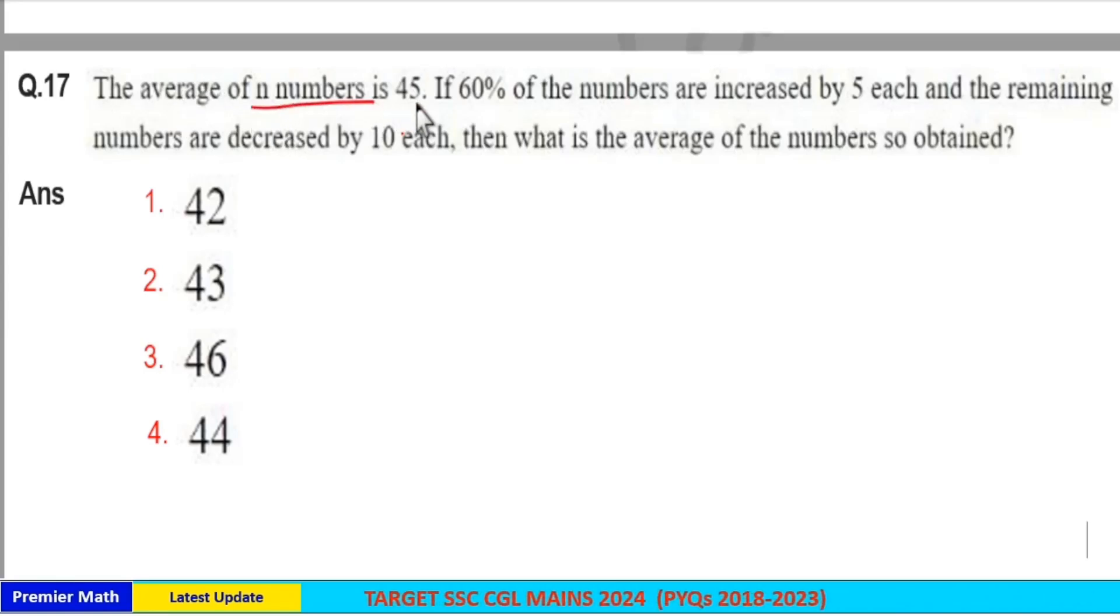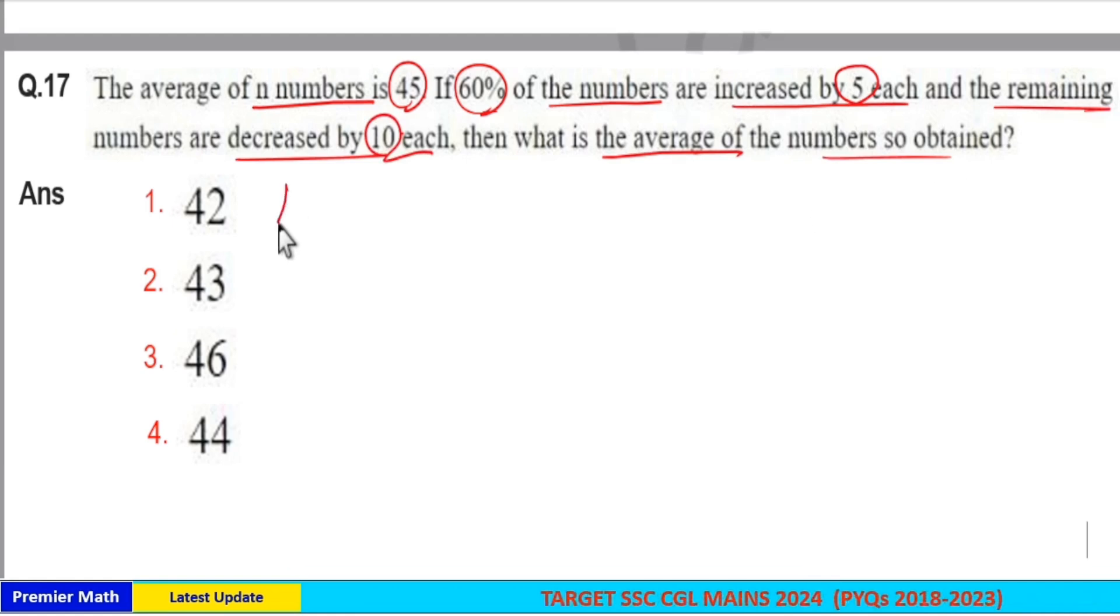The average of n numbers is 45. If 60% of the numbers are increased by 5 each and remaining numbers are decreased by 10 each, then what is the average of the numbers obtained? Let total numbers be 100.